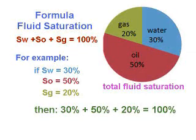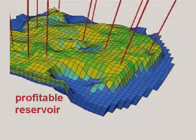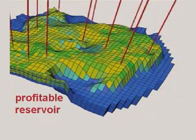We can write SW plus SO plus SG equals 30% plus 50% plus 20% equals 100%. These percentages are of great importance to the reservoir engineer because they give a measure of the economic value of the reservoir. Formations with high SO and/or high SG may indicate a profitable reservoir.